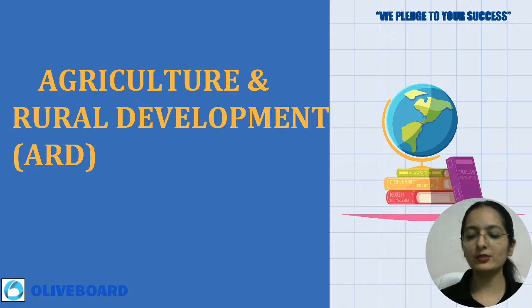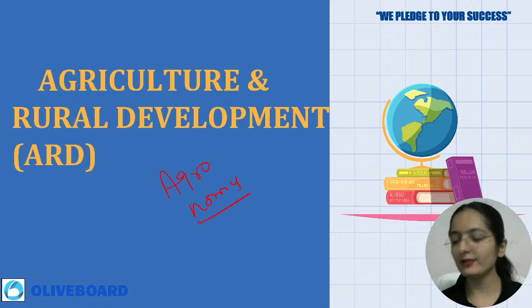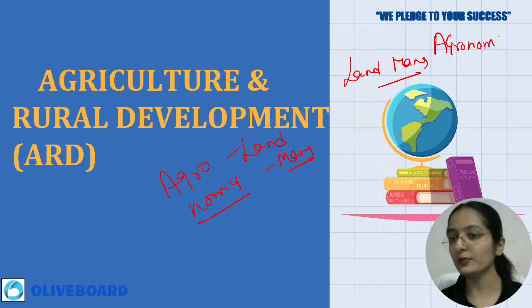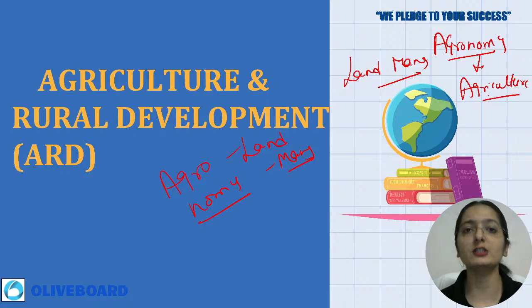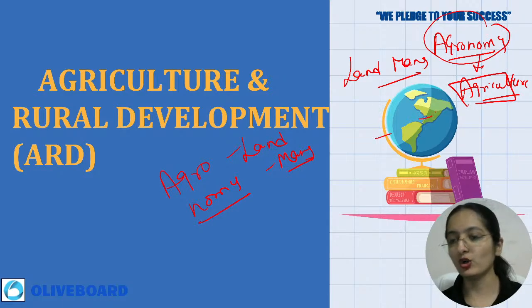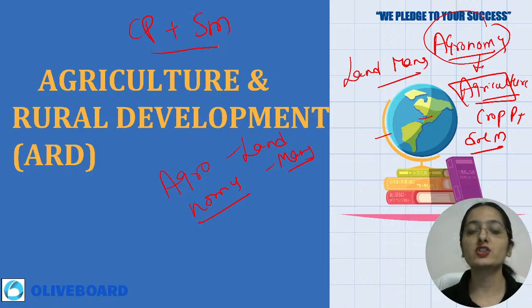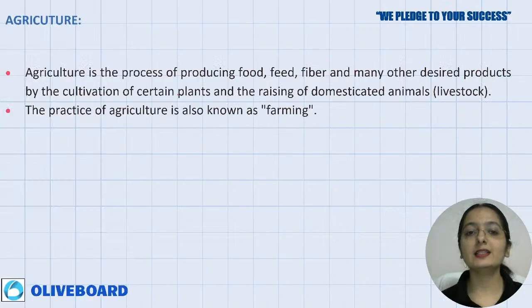Agronomy comes from French words: 'agro' means land and 'nomi' means management — so it is land management. Agronomy is that branch of agriculture that deals with crop production plus soil management. It is a branch of agricultural science and technology that uses plants to produce food, fuel, fiber, and for land reclamation.